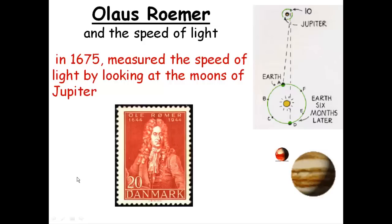Well, 1675 rolls around and he decides to look at the moon Io, which is going around Jupiter. The period, or the rate at which Io goes around Jupiter, was well established. People knew exactly how long it took. For convenience, let's say it took two days to go around Jupiter and end up at the same point.